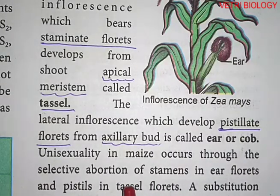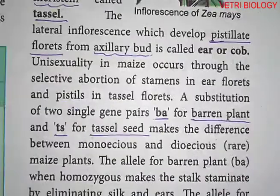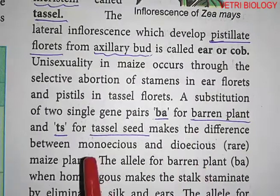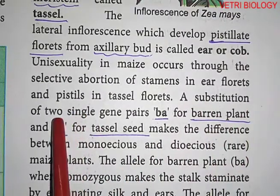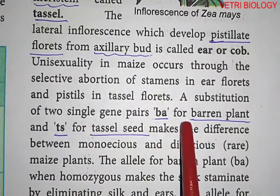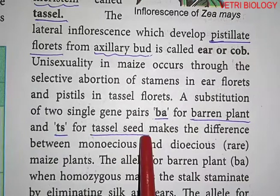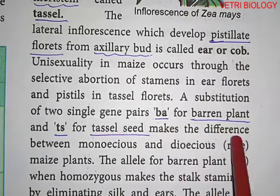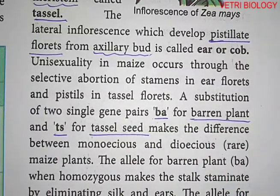Two single gene pairs — ba for barren plant and ts for tassel seed — make the difference between monoecious and dioecious in maize plants.